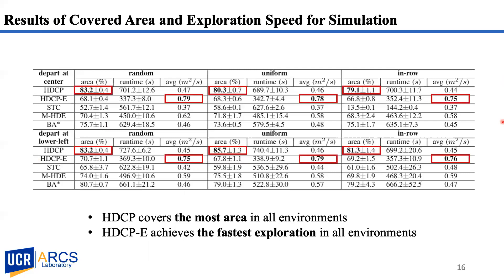In terms of exploration speed, HDCP covers almost twice as fast as STC and VA-star in all environments from both departure positions. This result shows that the subregion selection strategy of HDCP and HDCPE is efficient in terms of exploring more unknown space.